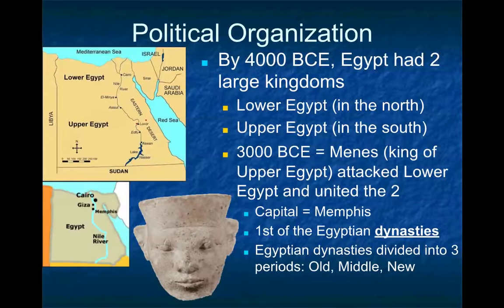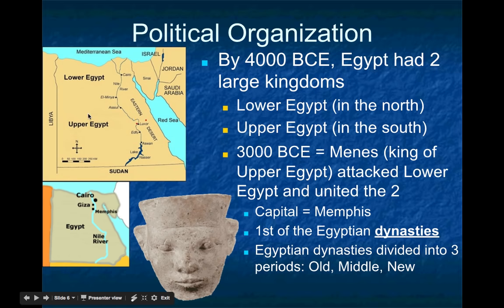Like all early civilizations, political organization is one of the defining characteristics of a civilization. Before Egypt organized, it was divided into two kingdoms — the Lower Kingdom in the north and the Upper Kingdom in the south. The reason they're called upper and lower may seem backwards, since lower is actually north, but it follows the flow of the river. Since we're downstream on the Nile, this is why we call it Lower Egypt, and upstream is Upper Egypt — it has nothing to do with north and south.